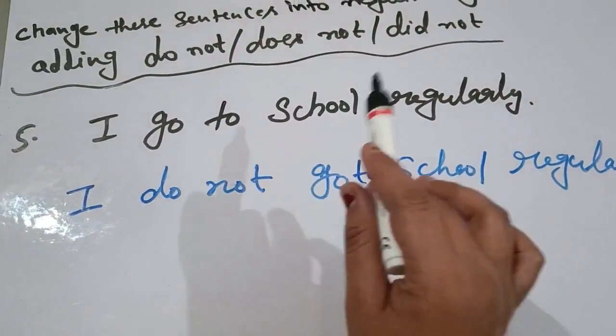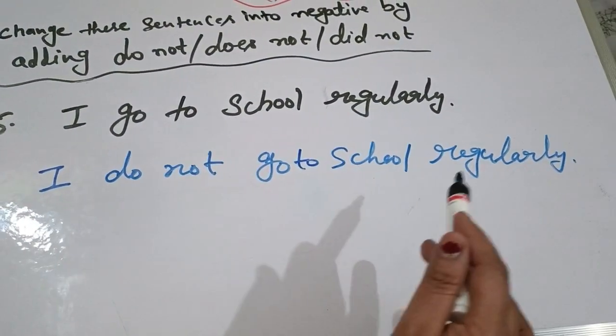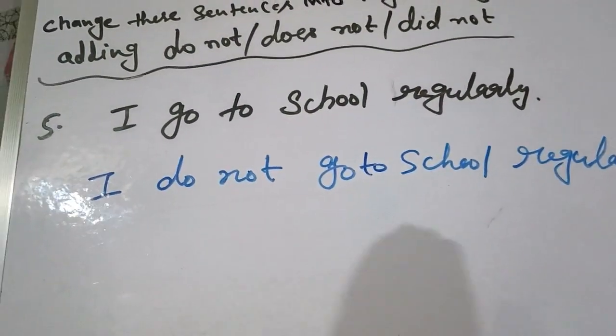For example, I go to school regularly. I do not go to school regularly. This way, we have five examples.